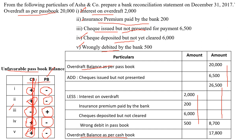Bank reconciliation statement is a very simple concept if you understand the plus and minus sign logic. The key rule to remember is: if you are starting with a favorable balance, strike off the same book; if you are starting with an unfavorable balance, strike off the opposite book. That's all — otherwise this is a very simple problem. Hope you understood and found this video useful. Thank you for watching.